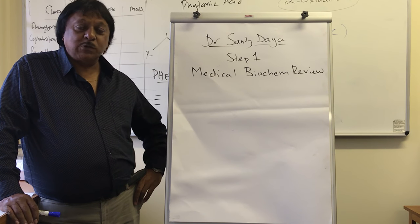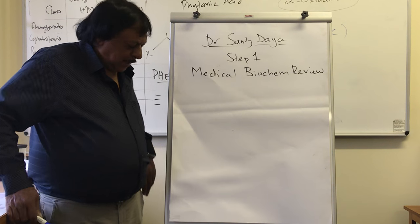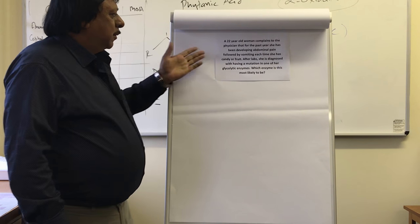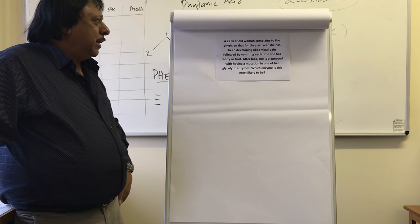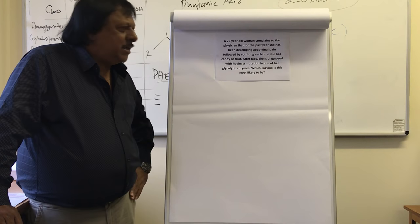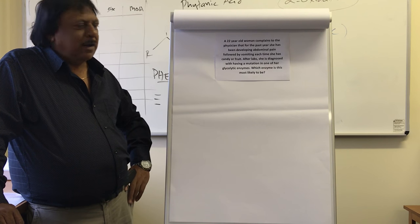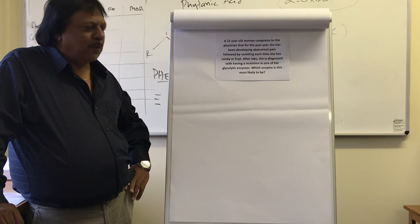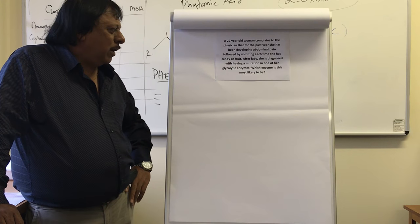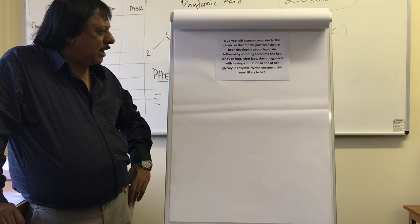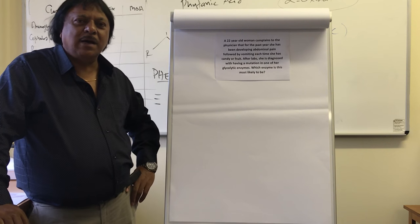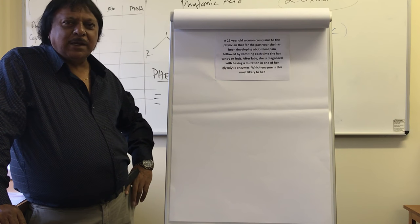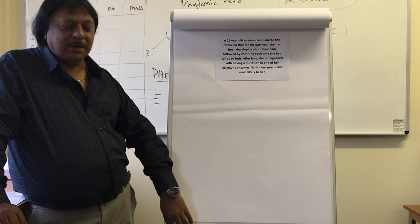They have not been taken from any other source or institution. So let's begin with a problem. We have a 22-year-old woman who complains to the physician that for the past year she has been developing abdominal pain followed by vomiting each time she has candy or fruit. After various labs were performed, she was diagnosed with having a mutation in one of her glycolytic enzymes, and the question we need to address is: which glycolytic enzyme is this most likely to be? Let's take a look at the glycolysis pathway and then come back to this question.